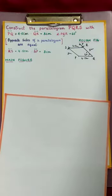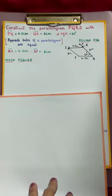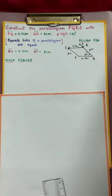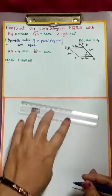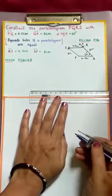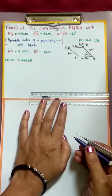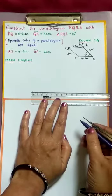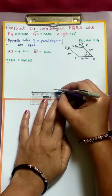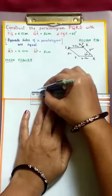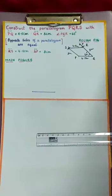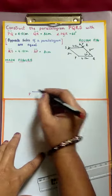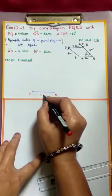Now we will construct the main figure. Take the ruler and compass. First, construct PQ 4.5 cm. Place the scale, mark your starting point at 0, ending point at 4.5. Join the two points so we get the line segment of 4.5 cm length. Name it PQ, 4.5 cm.